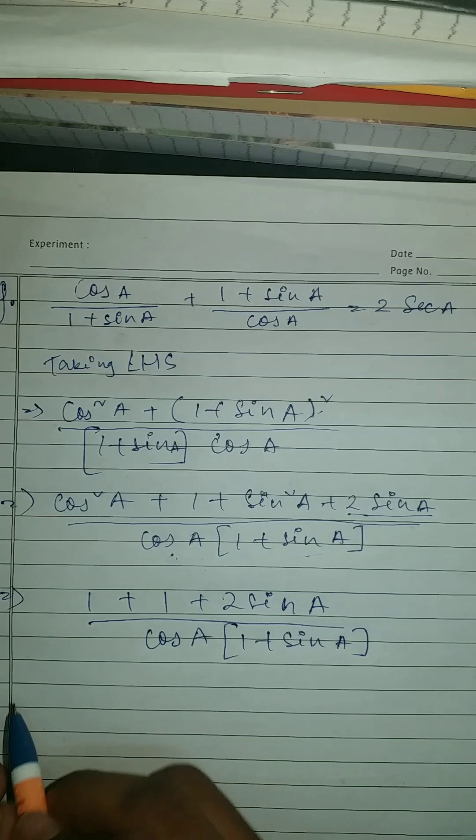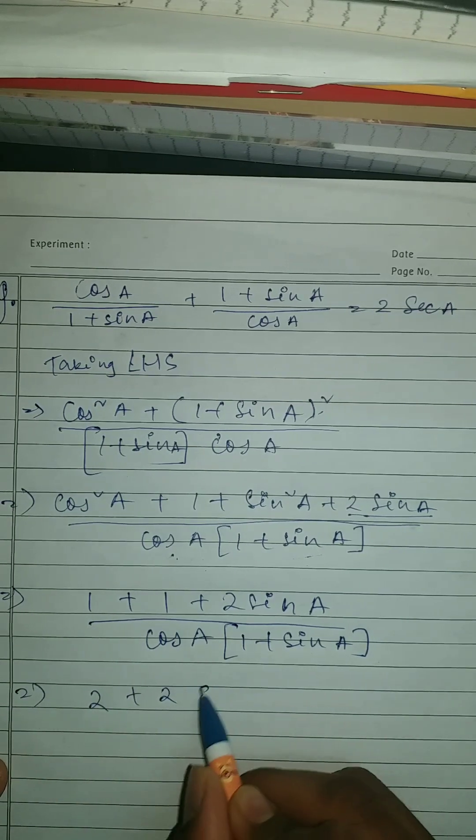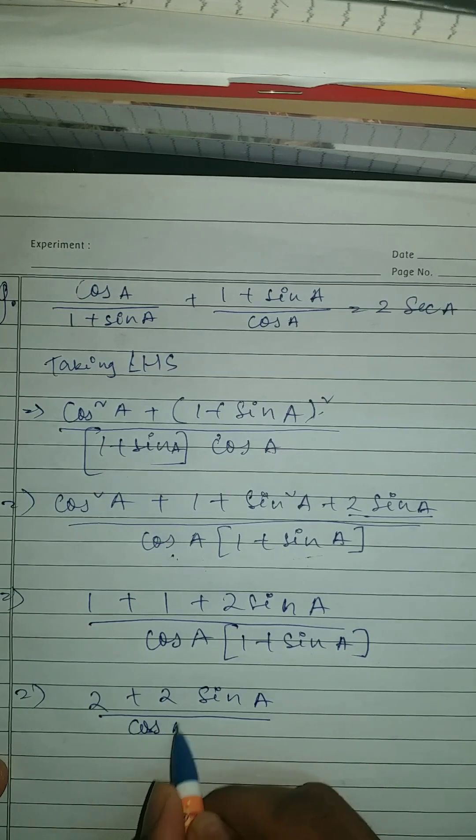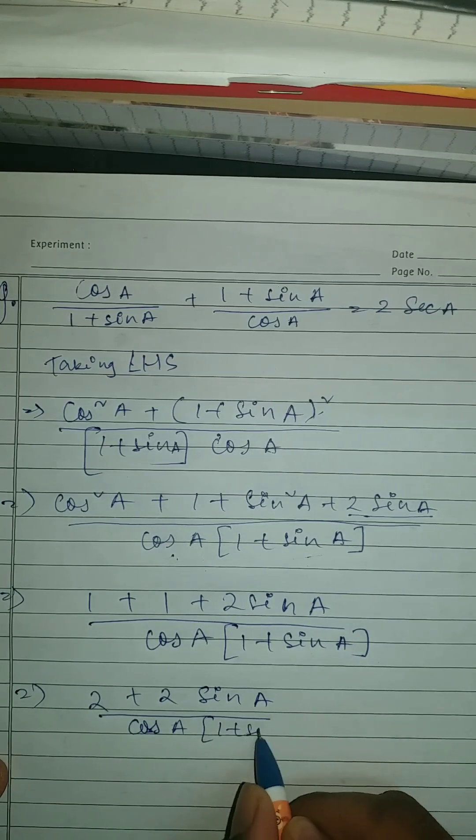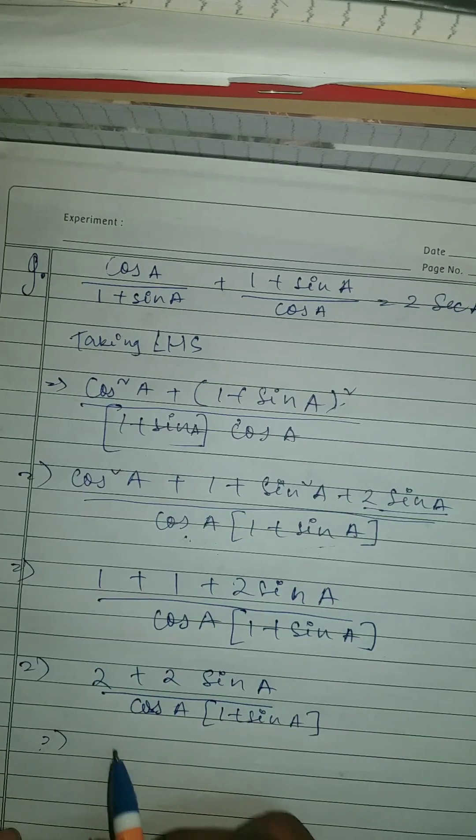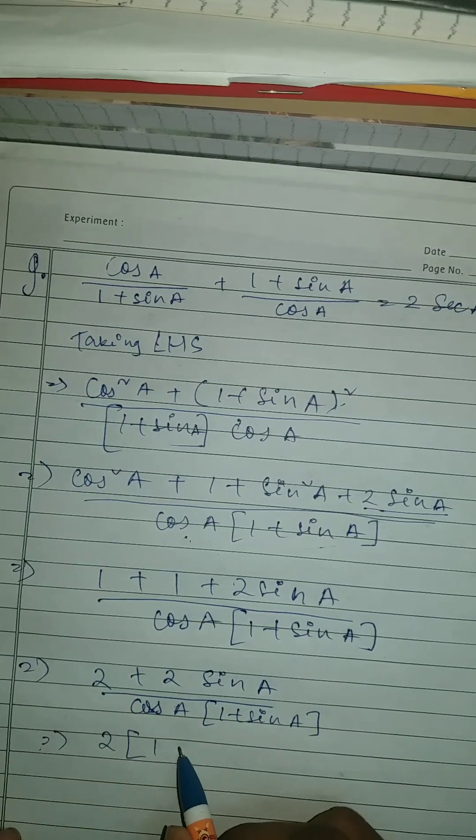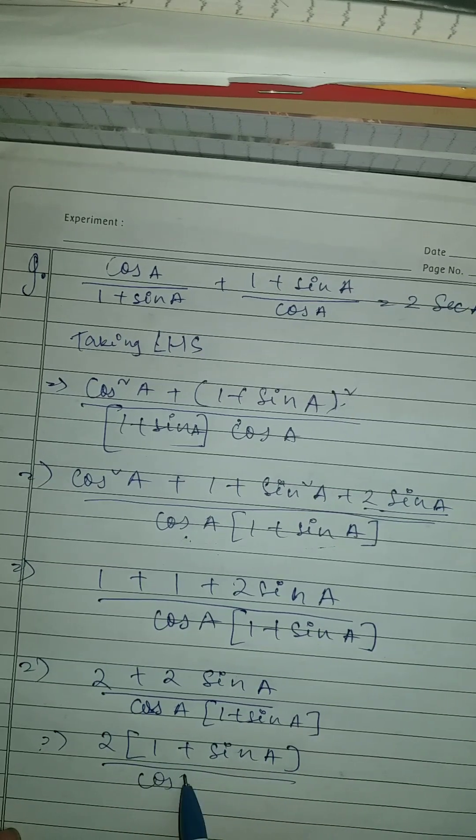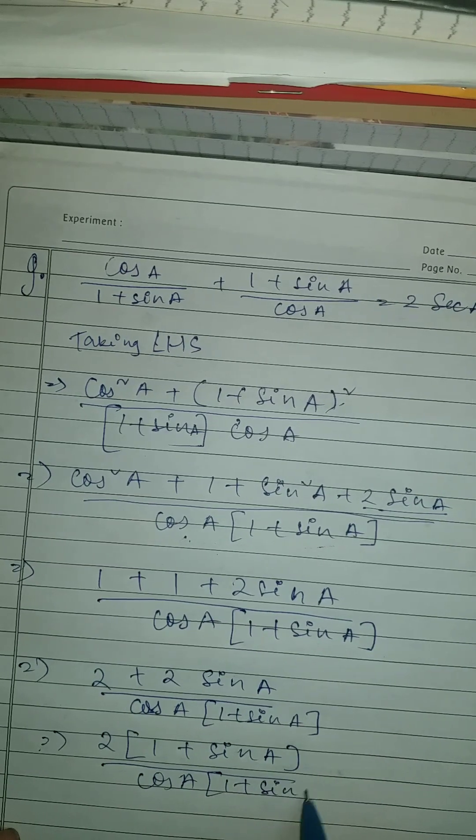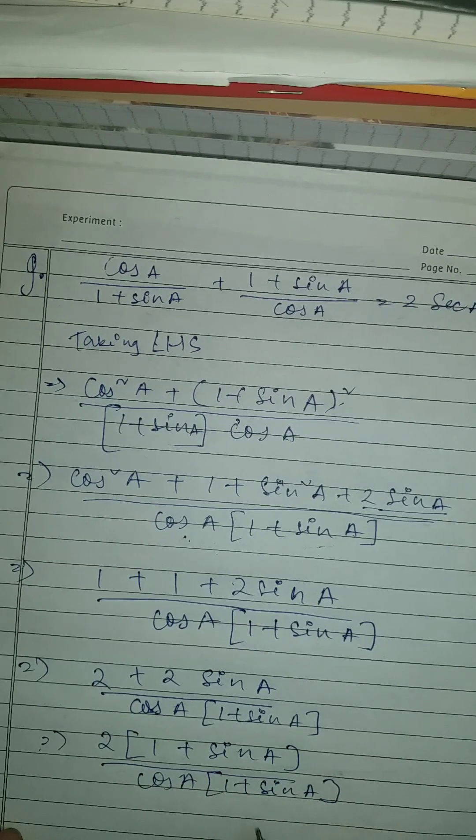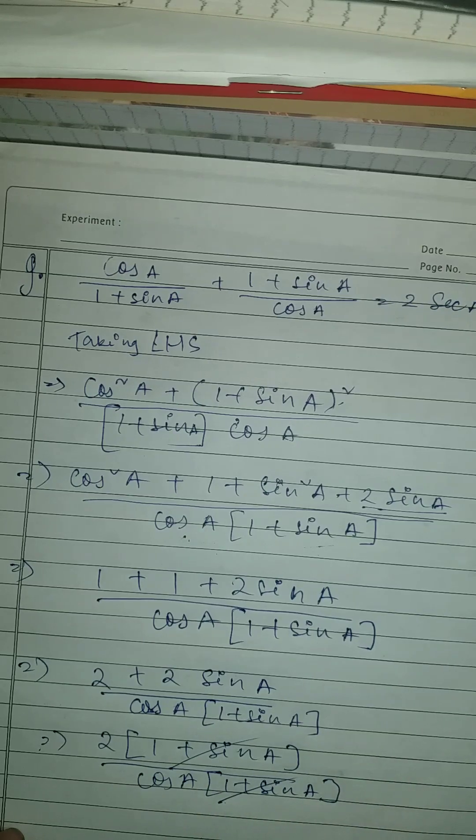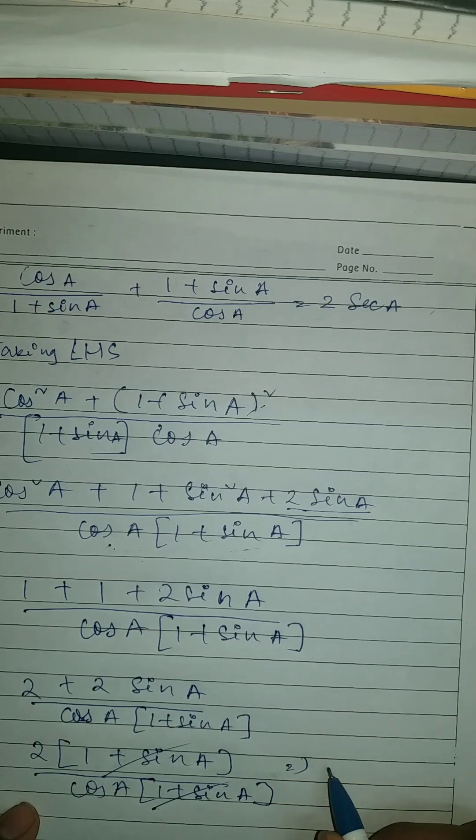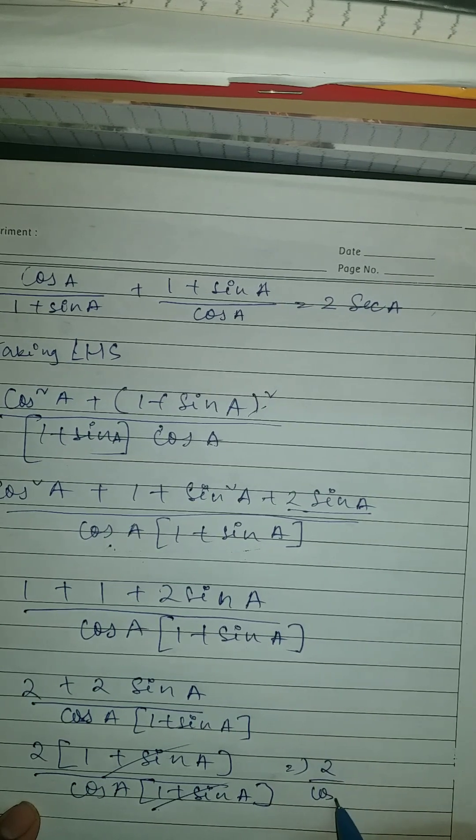Once you've done that, here what we got, we got 2 plus 2 sine A. So it should be 2 (1 plus sine A). Now here we can see that these are canceling. So yeah, it is canceled.